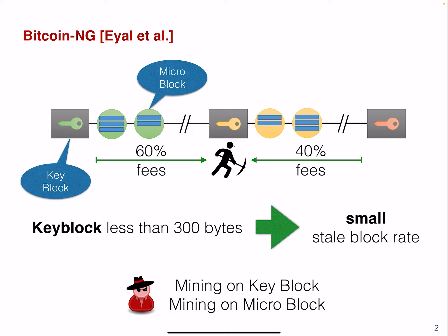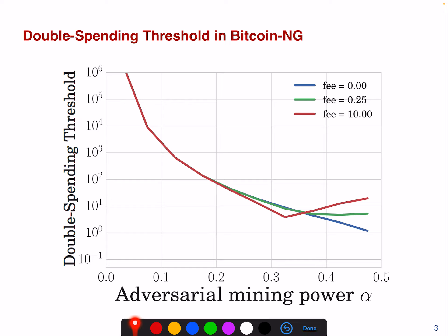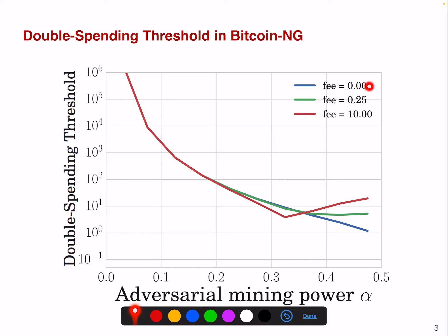If we look at an adversary now — should we be mining on the key block or on a micro block? What's the optimal adversarial strategy? We looked at this and encoded it in an MDP. For a regime where we have zero fees, we can see the blue line here. For a regime where fees are 10 times the block reward, we can see a bit of different dynamics.